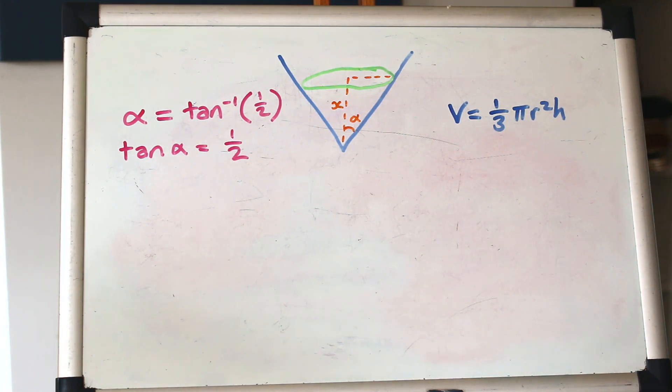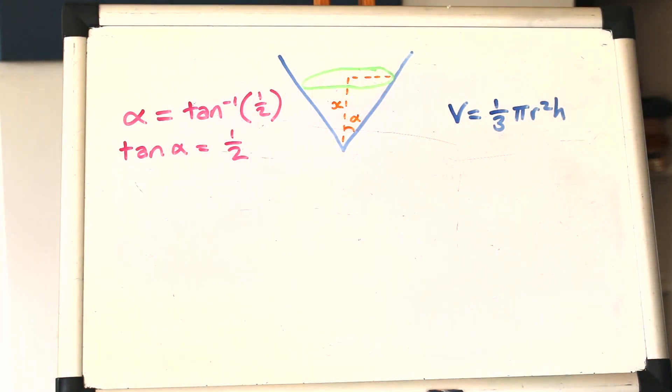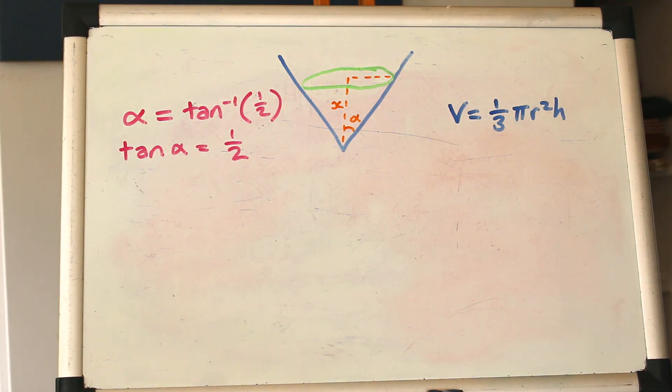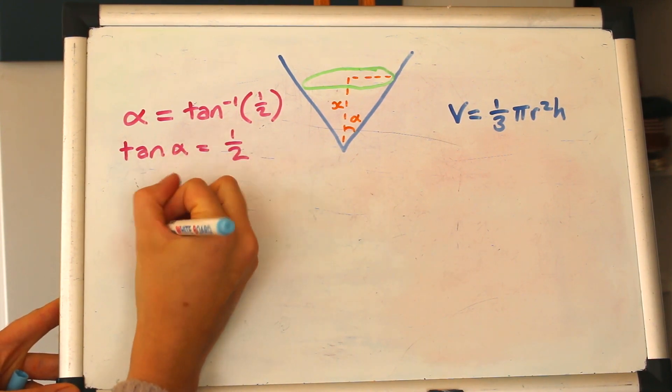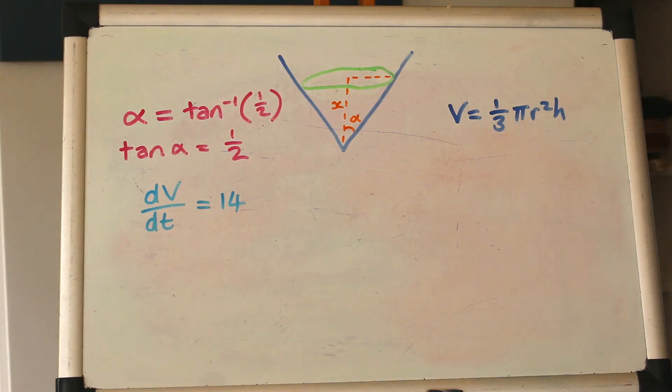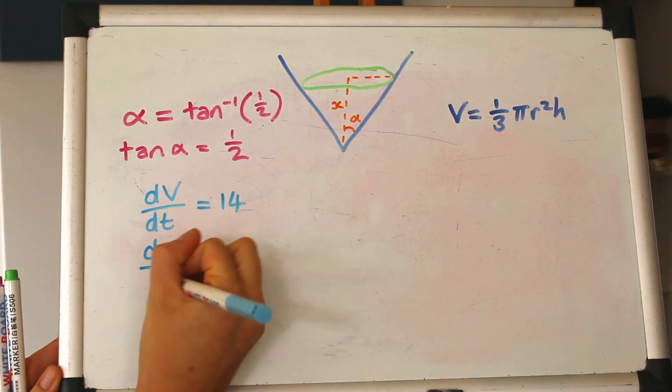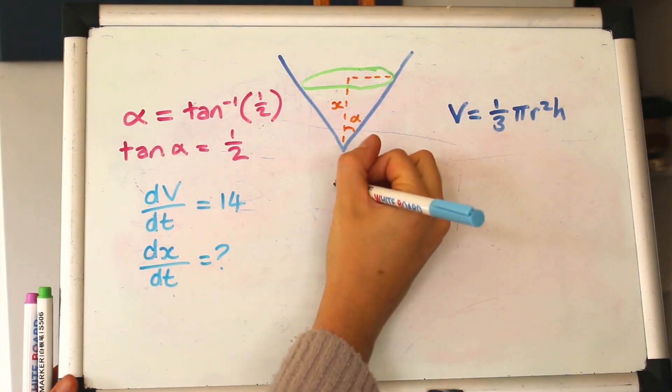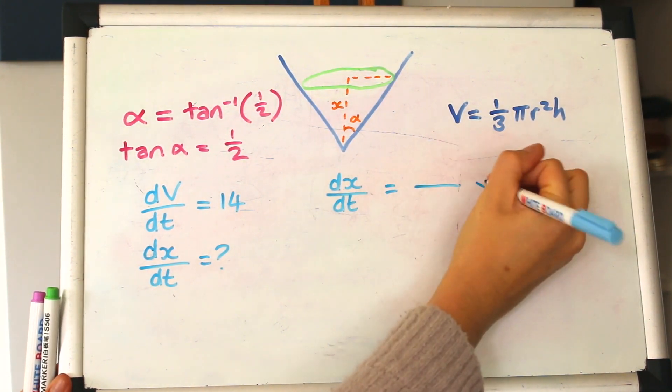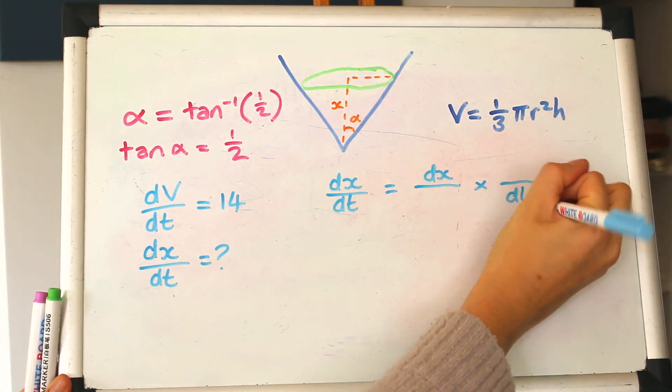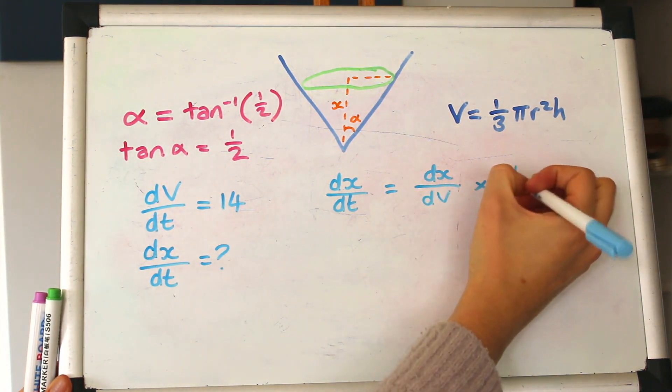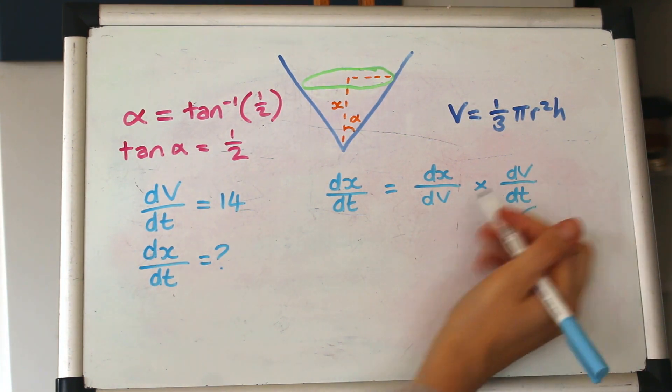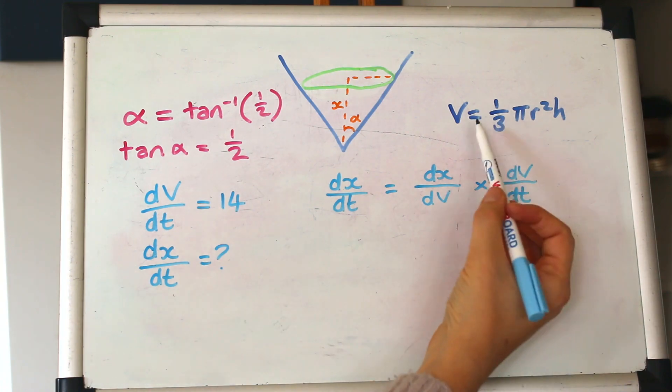So we've got liquid filling into this cone, and we're being told some information. We've got the liquid is added at the rate of 14 cubic centimeters per minute, so working out what we're being told there, it's volume changing over time, centimeters cubed per minute, so that is dV by dt. And we're told that's 14. What are we being asked for? We want the rate of change of the depth, so we're wanting how x changes over time. So setting up an equation, we're wanting dx by dt, so putting the dx on the top of the first and dt on the bottom of the second. The other variable is V, so we can fill that in. So we've got dV by dt, and we want dx by dV.